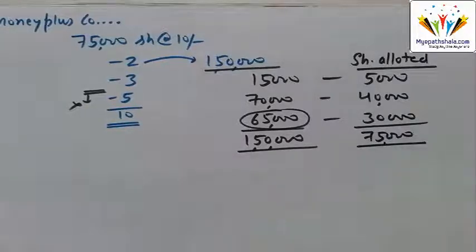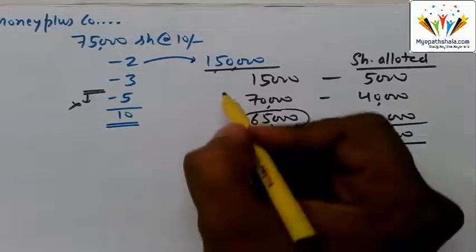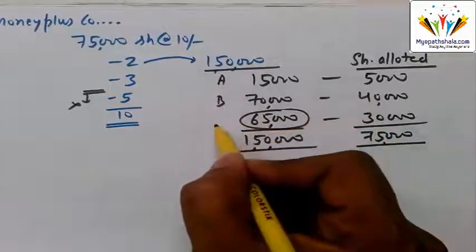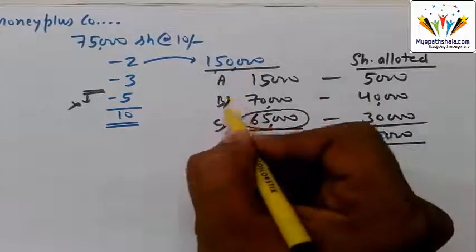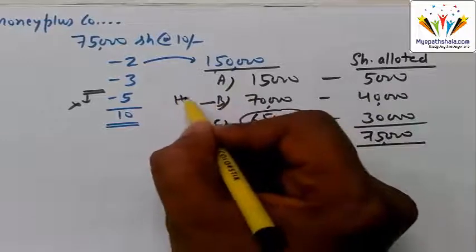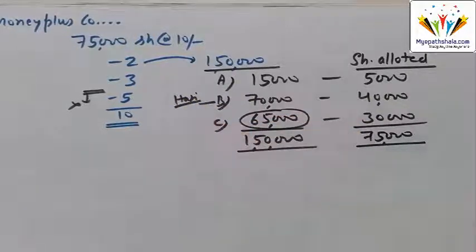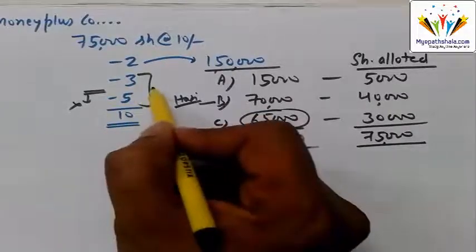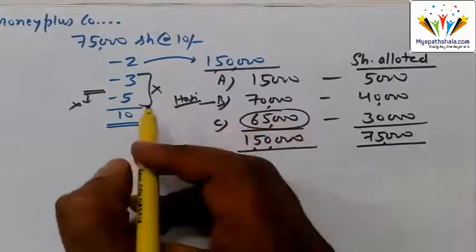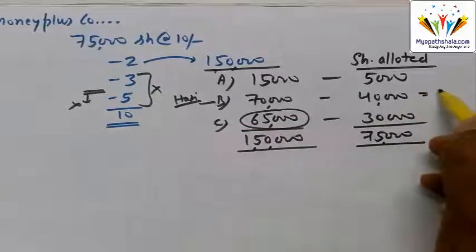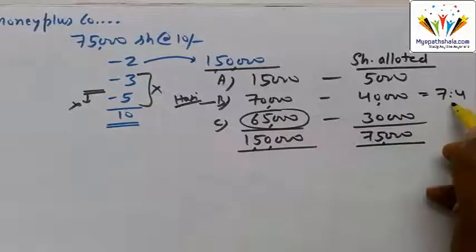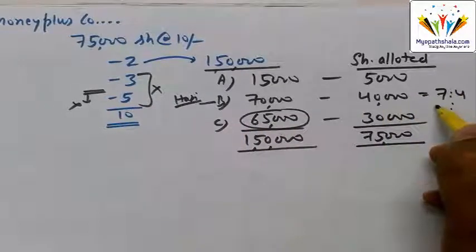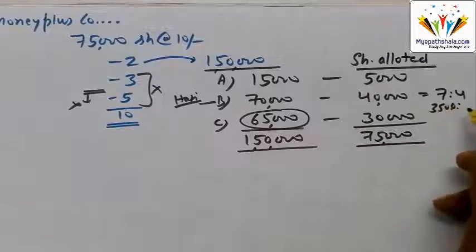A shareholder who had applied for 35,000 shares out of Group B failed to pay the allotment and call money. There are three groups: Group A, Group B, and Group C. For Group B, the allotment ratio is 7:4, and this shareholder applied for 35,000 shares.